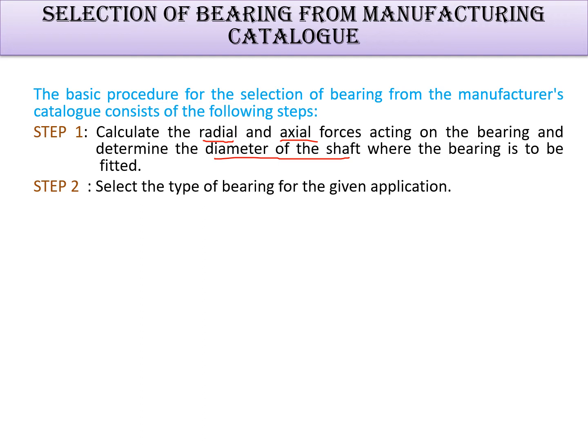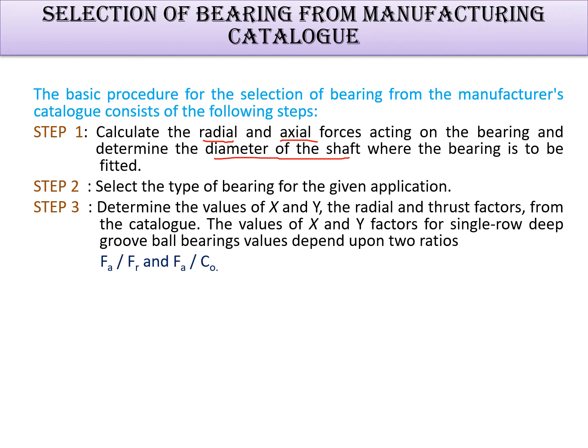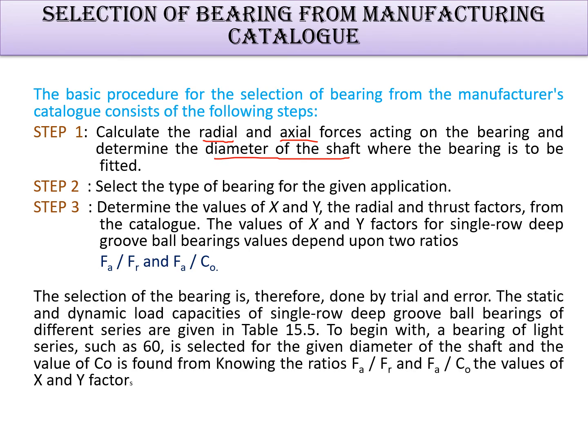The second step is to select the type of bearing for the given application. Based on the application, you choose the appropriate bearing — for example, a deep groove ball bearing. Third, determine the values of X and Y based on the radial and thrust load factors. If only radial load or only thrust load is present, finding X and Y may not be strictly necessary. When both load types act simultaneously, you must find the radial and axial loads and compute fa/fr and fa/C0 to select the bearing by trial and error from the table. A light series bearing such as the 60 series is selected for the given shaft diameter.